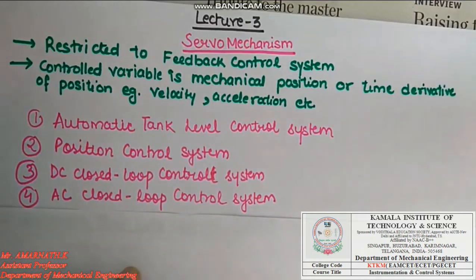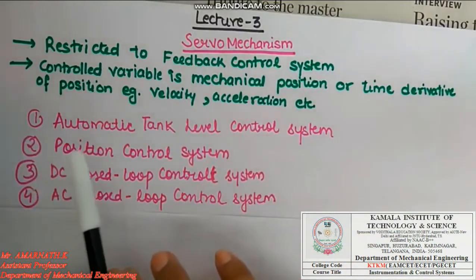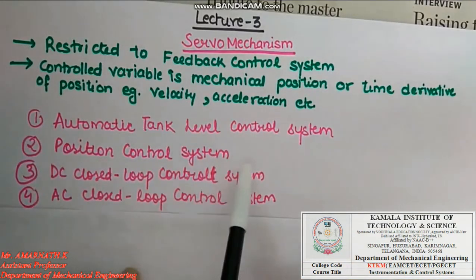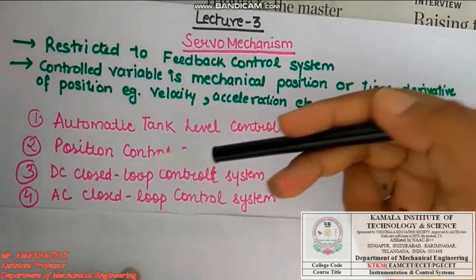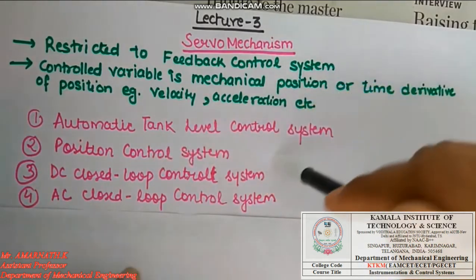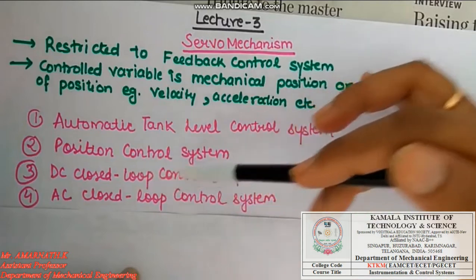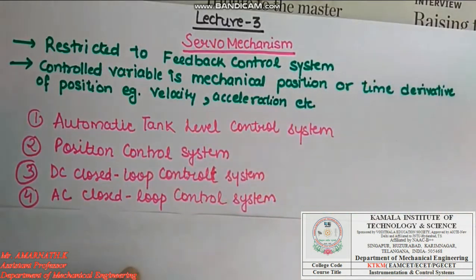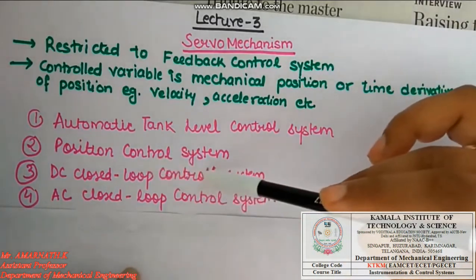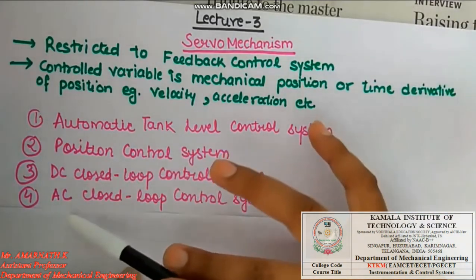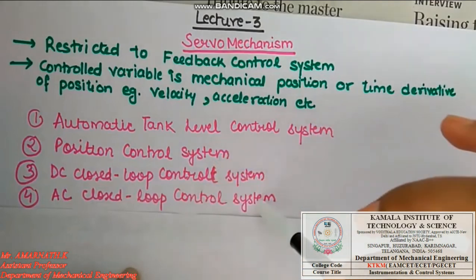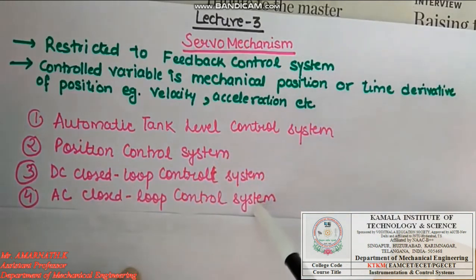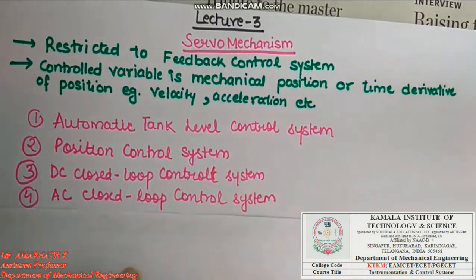The first application is the automatic tank level control system, in which the water level is set to a required point in a tank. The second is a position control system, in which we study the gate position in a machine. The third is a DC closed loop control system using a DC motor to control the speed of the motor, and the fourth is an AC control loop system in which an AC motor is used to control the speed.